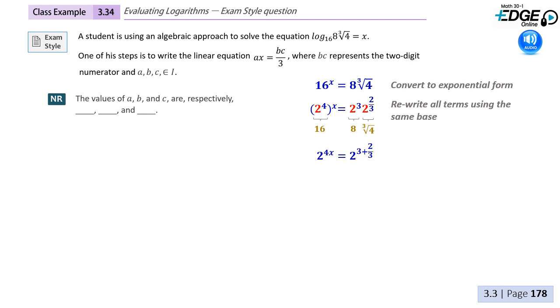Our first step will be to convert to exponential form. The giveaway here is that the numbers 16, 8, and 4 can all be written in base 2. Once we put this into exponential form, we'll be able to rewrite all terms using a common base.